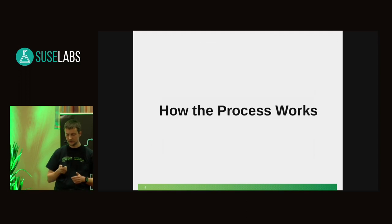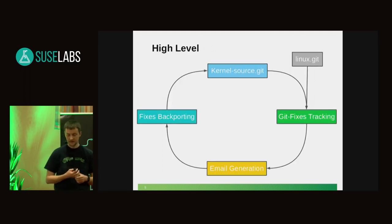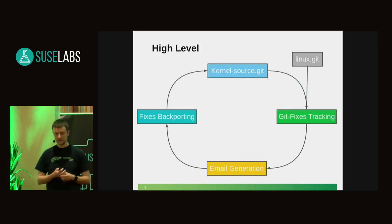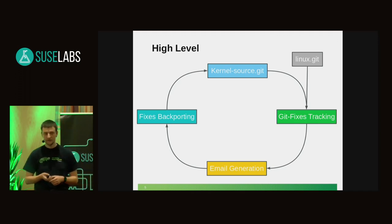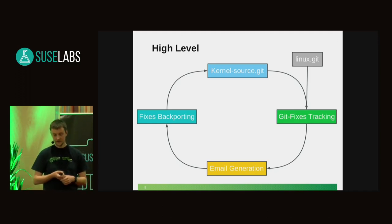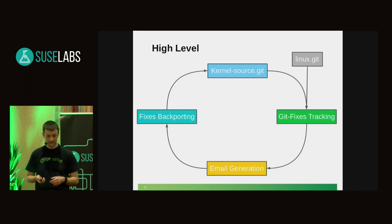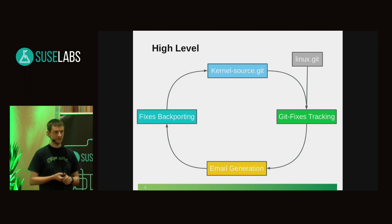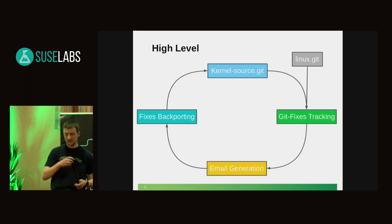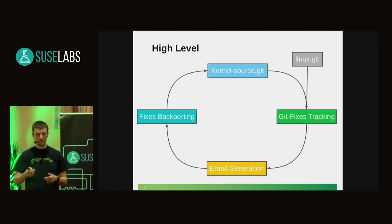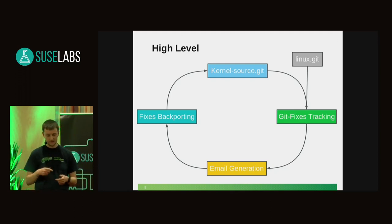How does the process work of generating these emails you get every week or potentially every day? From a high level view, we have kernel-source.git and we have linux.git. It contains our kernel branches and linux.git is the upstream tree. This is the input for the Git fixes tracking. The Git fixes tracking generates a list of potential fixes for every kernel branch. These lists are used as input for the email generation tool. The email generation tool sends out the emails to everyone and to the mailing lists. Then the developers backport the fixes or blacklist them. When they are backported, they get into kernel-source.git, the Git fixes tracking notices it and updates everything, and they disappear from the next email and the cycle starts again.